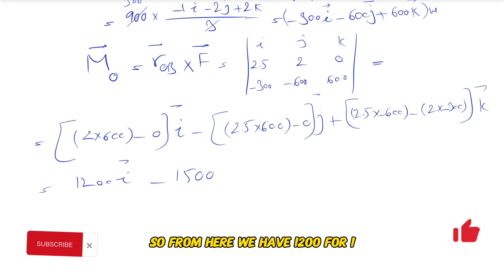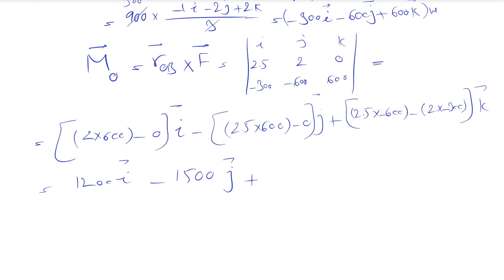For k we'll have 2.5 times -600 minus 2 times -300. From here we have -1500j for j, and for k we have -1500 plus 600, which will be -900k.